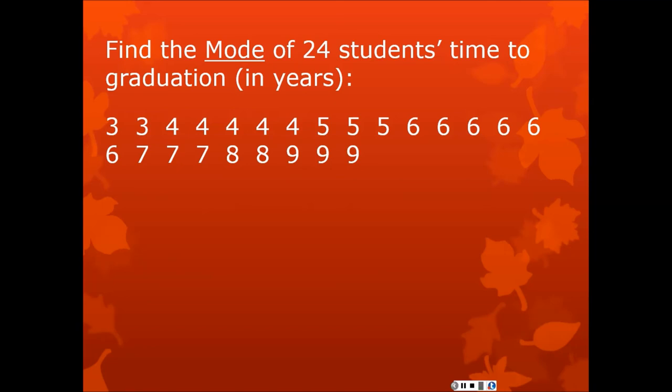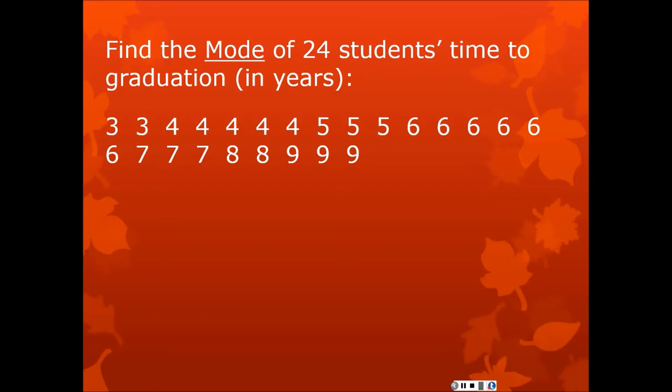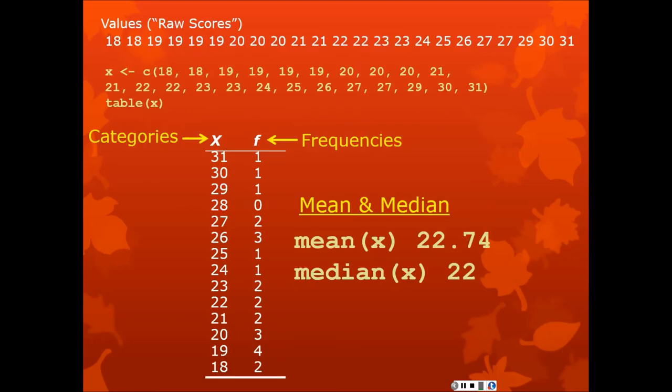So here's some data. Find the mode of 24 students time to graduation. This is the number of years 24 students took to graduate. Let's see. There's two threes. So that's not it. One, two, three, four, five. It's all in order, which makes it easier. There's five of these. So that's a possibility. Is there anything that has more than five? Well, there's only three of these. There's five of these. Oh, there's six of these. Thank heavens. All right. So six is the mode because there are more sixes than anything else. But look back here. There are three 26s, but there are also three 20s. There's two modes. That can happen. You can't have two means. You can't have two medians. You can have a lot of modes.